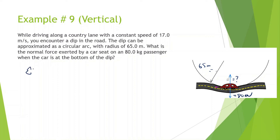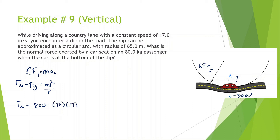Sum of all forces in the y equals mass times centripetal acceleration. Normal force is pointed towards the circle, so we're calling that positive. Force of gravity is pointed away from the circle, so we're calling that negative. That equals mv squared over r. Force normal — that's what we're looking for — minus 800 equals mass 80, v squared 17 squared, divided by r 65. If you've ever been going through a dip in a road, you get that feeling in your stomach and you feel kind of heavy. The normal force is going to be more than just the force of gravity. The calculations give a normal force of around 1155.7 newtons.